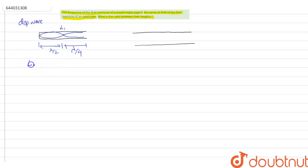So suppose the length of the closed organ pipe is L1. You can say that the length is equal to lambda by 2 plus lambda by 4. This implies L1 is equal to 3 lambda by 4.